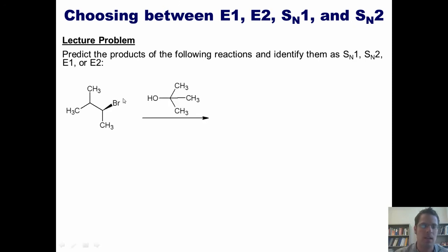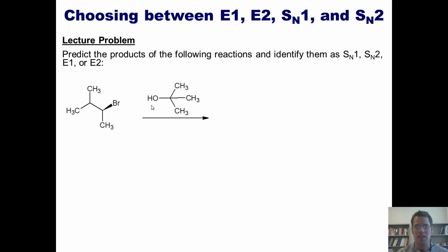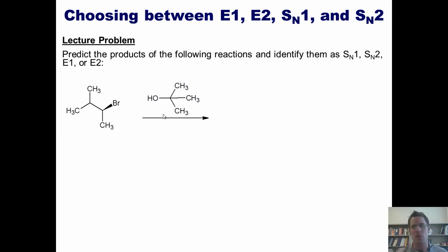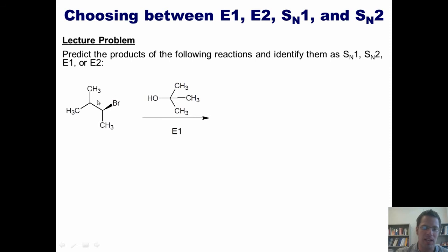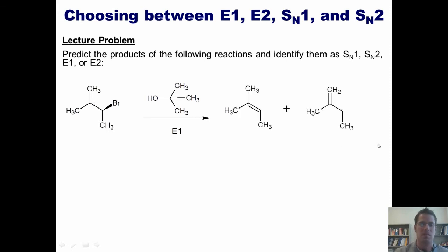Let's move on to this example. Is my leaving group stuck to a primary, secondary, tertiary, or stabilized carbon? It is secondary — could be SN1, SN2, E1, or E2. Is my nucleophile/base strong or weak? There are no localized negative charges of any kind, so it is weak — we can narrow it down to SN1 or E1. Is my nucleophile/base a nucleophile or a base? It is larger than ethanol on paper, so it is a base, meaning it will favor an E1 mechanism. The bromide takes off giving a secondary carbocation, a 1,2-hydride shift gives the more stable tertiary carbocation, and then this base can grab a hydrogen at either adjacent carbon, forming carbon-carbon double bonds at two possible positions, yielding a mixture of two products.